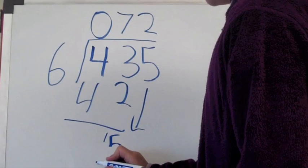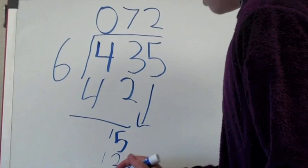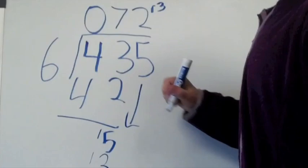Subtract 12 from 15, which is 3. Bring the 3 up next to the 72, which gets you your final answer: 72 with a remainder of 3. This is really easy!